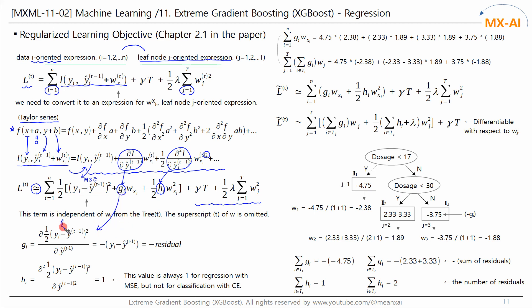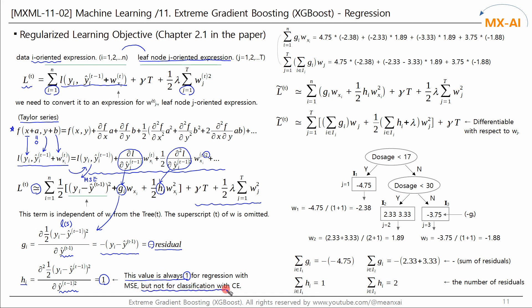g is the first derivative of MSE with respect to y-hat. The result is the negative residual. h is one more differentiation with respect to y-hat, and the result is 1. For regression using the mean squared error, h is always 1. However, in classification using cross entropy, it is not 1 — we will look at this later in the classification section.